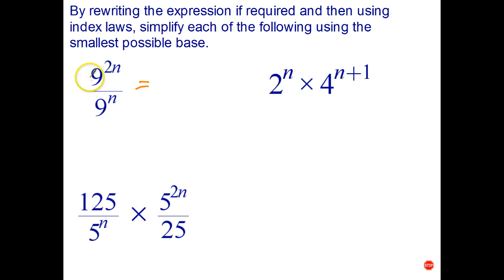Well the only way we can do that is if we can write 9 as a power, and it turns out of course we can write 9 as 3 to the power of 2, all raised to the 2n, and similarly in the denominator I write 9 as 3 to the power of 2, all to the n.